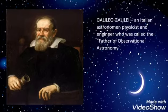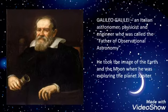Galileo Galilei is an Italian astronomer, physicist, and engineer who was called the father of observational astronomy. He took the image of the earth and the moon when he was exploring the planet Jupiter.